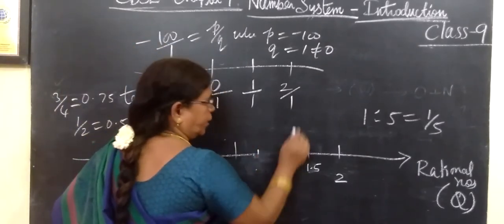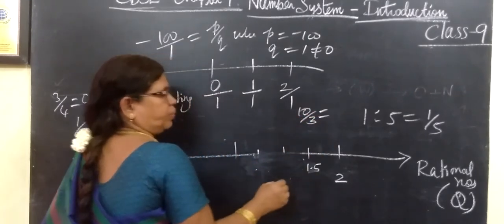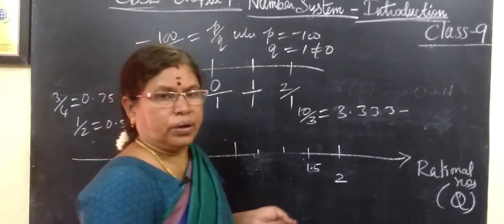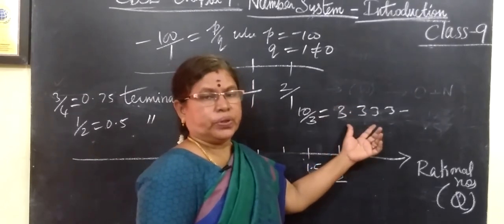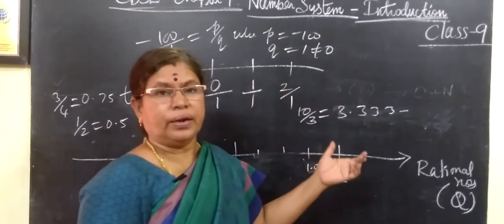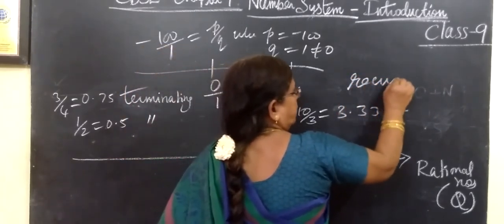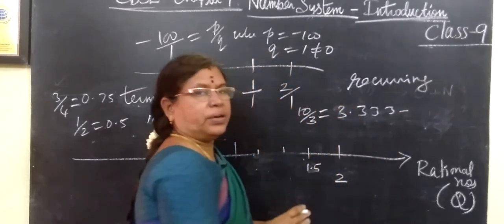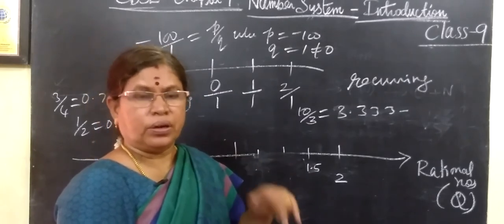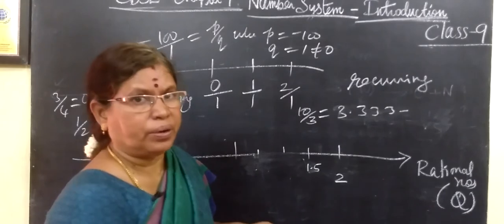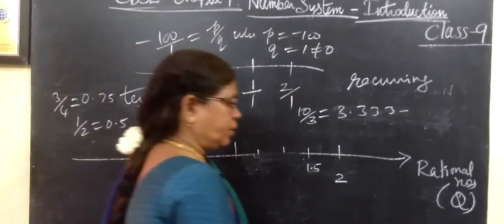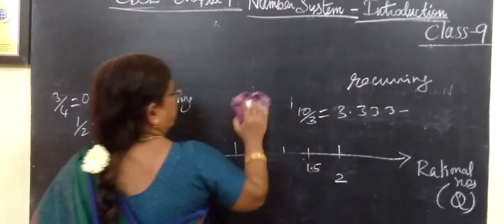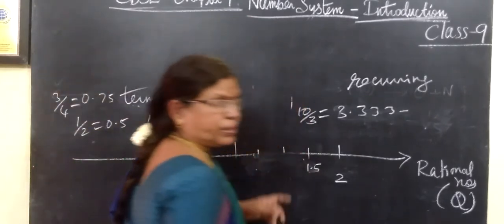Suppose you consider 10 by 3: that equals 3.333... going on. It is non-terminating and recurring — recurring means repeating. But a rational number should be written in the form P by Q, and we need to verify we can write it in that form.